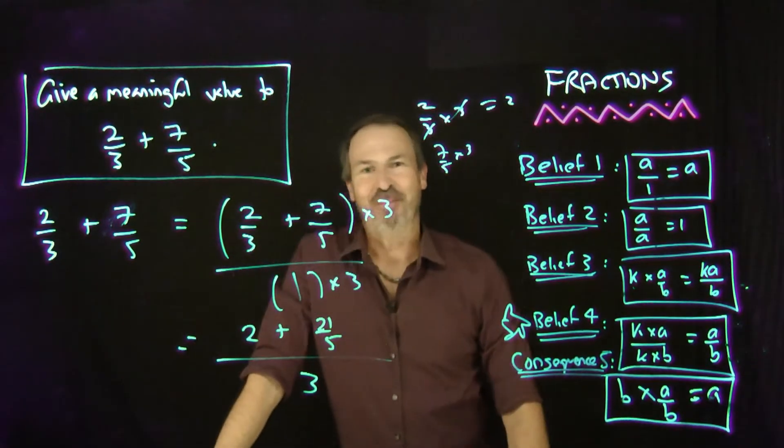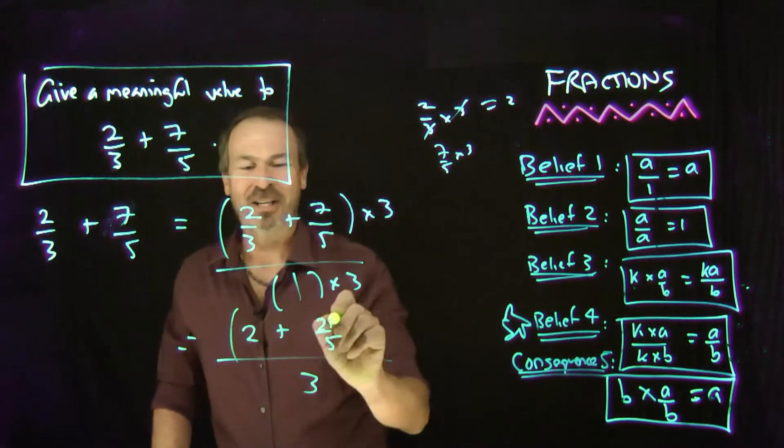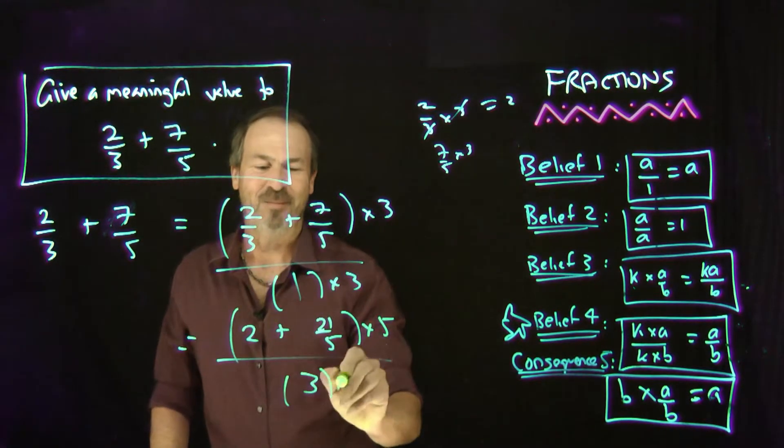Oh, I've got fifths on the top. Don't like fifths on the top. How can I handle that? Let's multiply top and bottom by 5 now. By 5.